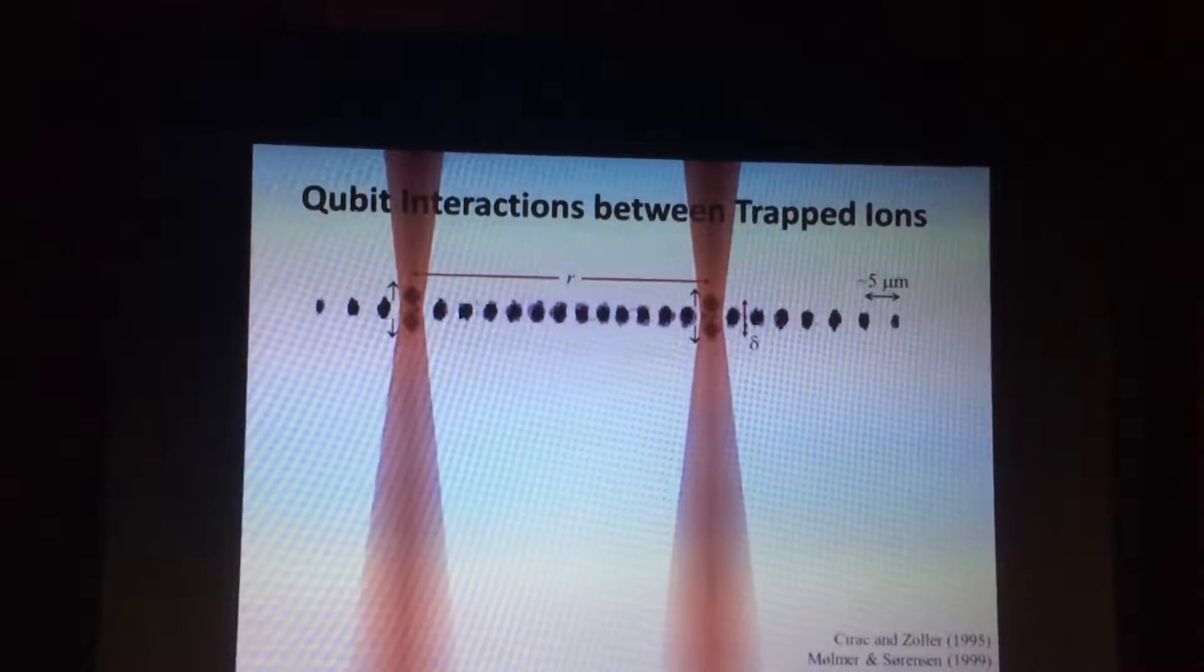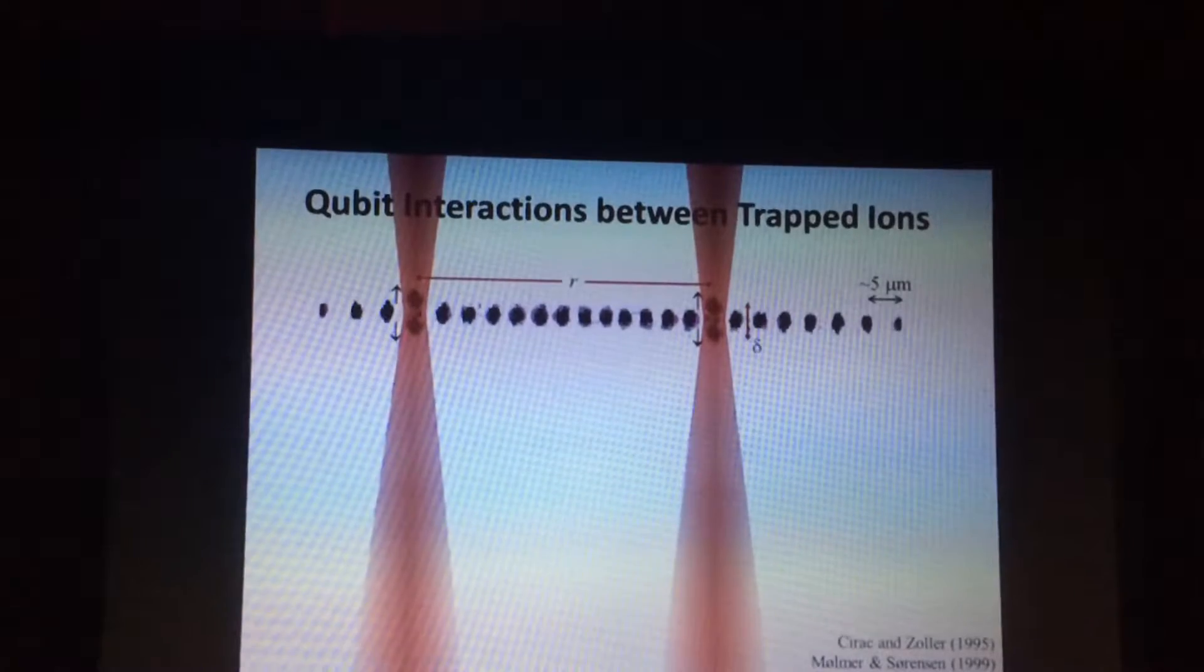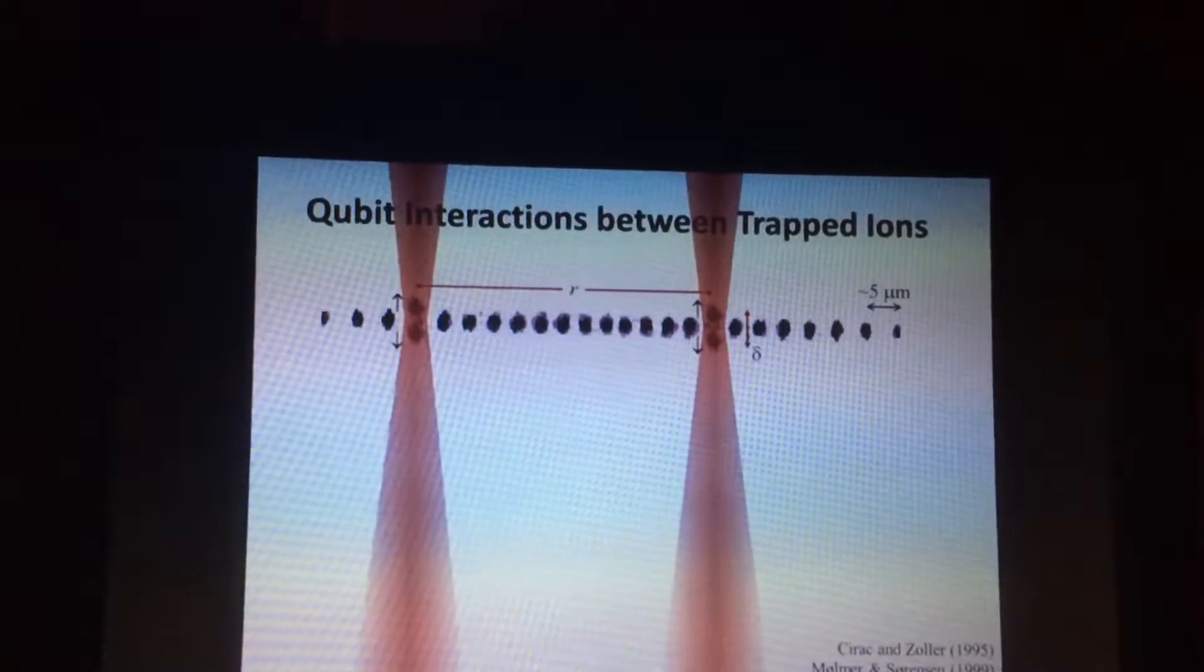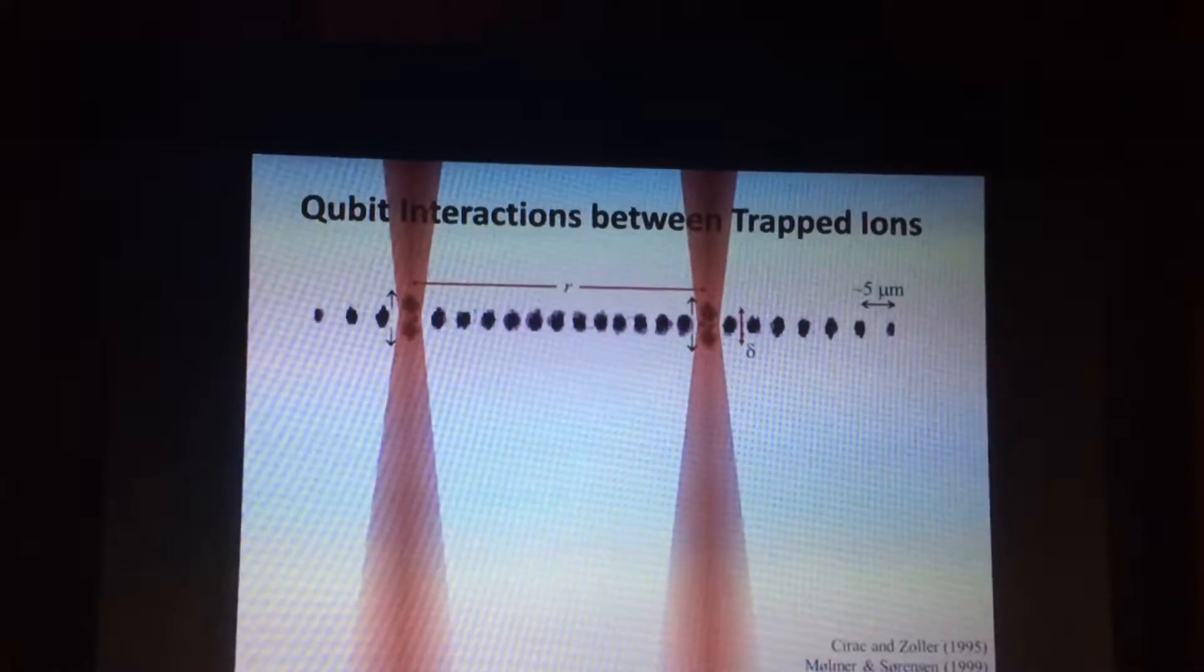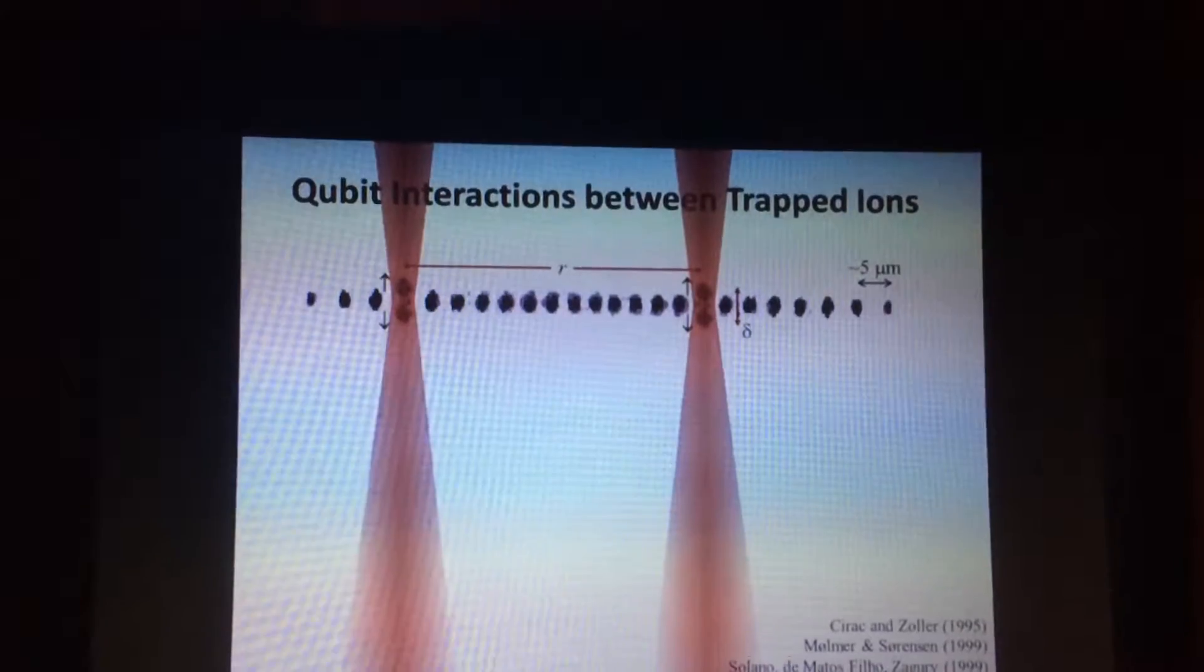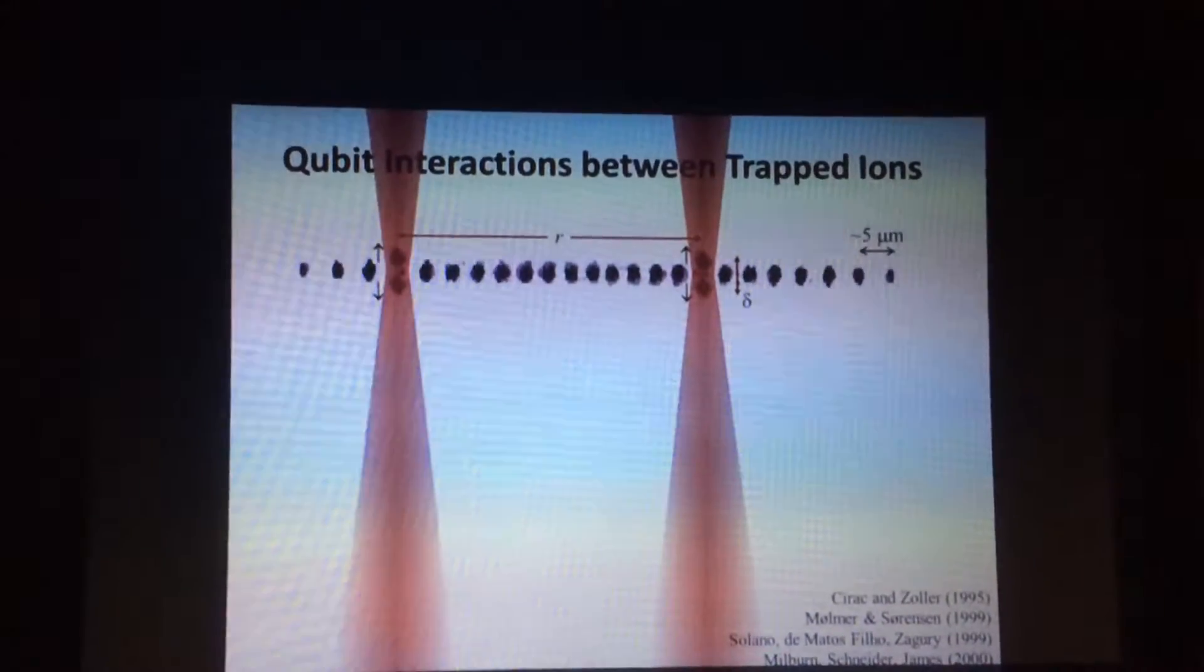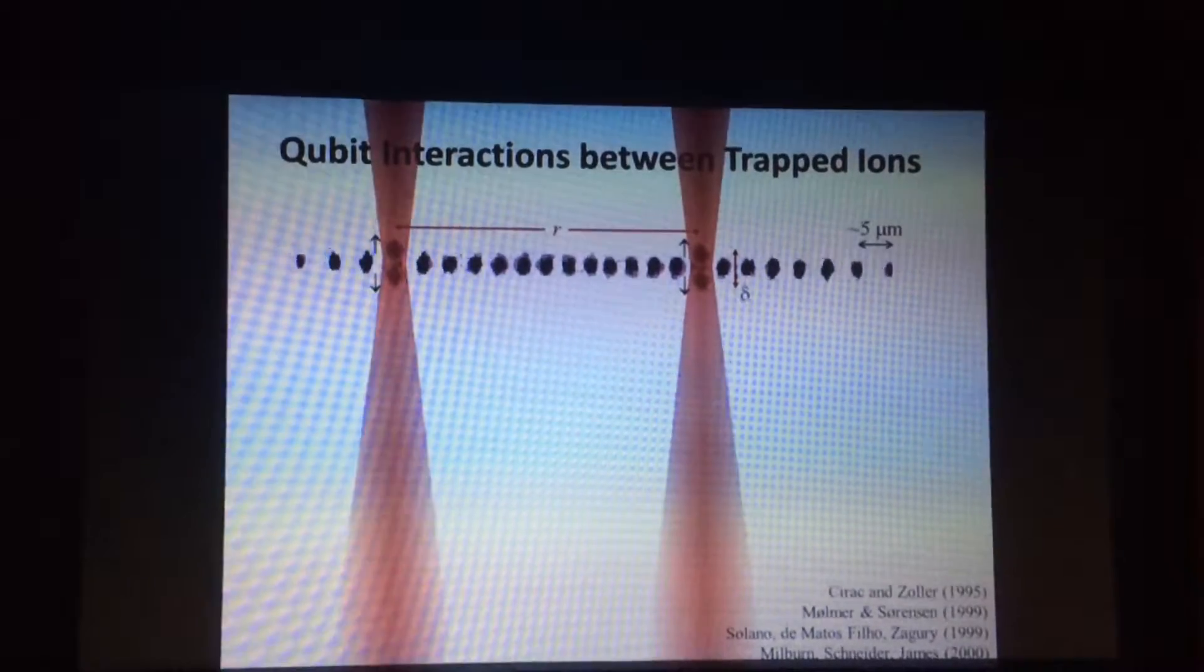We shine two laser beams that only hit the two atoms in question, and these laser beams are tuned in a very special way that allow us to apply a force to the atoms. It pushes the atoms, but very importantly, it pushes the atoms in a direction that depends on their internal state. And this can be done based on selection rules of the atomic transitions. And we do this with our 355 nanometer lasers.